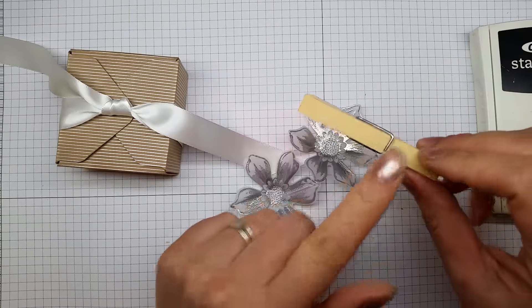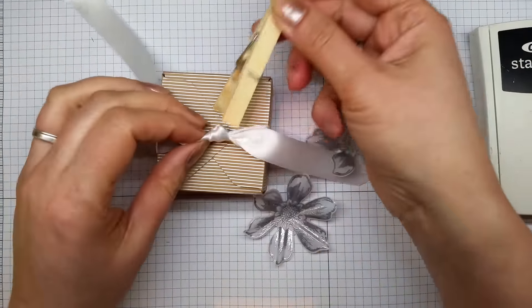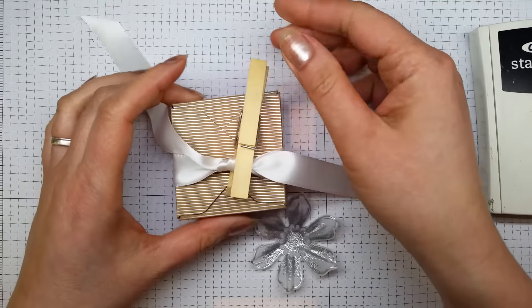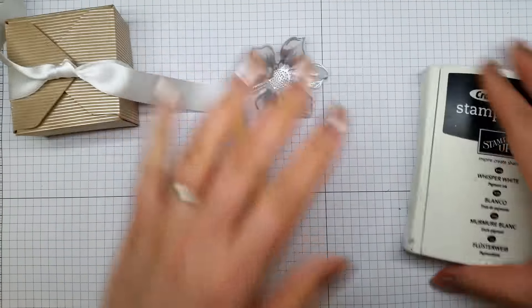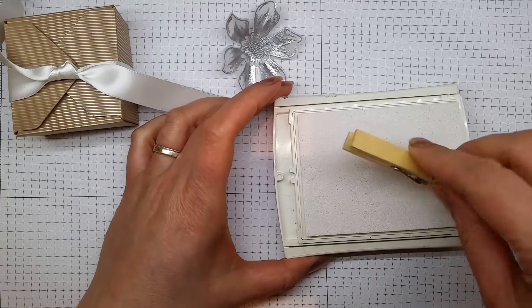What I'm going to do is actually adhere this to a peg so that whoever you're giving this to, if they decide to have the peg and use it for something else, they can do that. I've just got my craft stamp ink here—this is an opaque white.